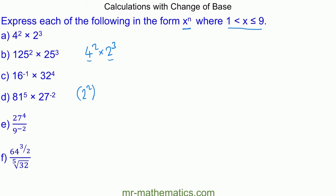This becomes 2 squared to the power of 2, multiplied by 2 cubed. Using the power rule, we get 2 to the power of 4 times 2 to the power of 3. Now we can add the powers using the multiplication rule, giving us 2 to the power of 7.